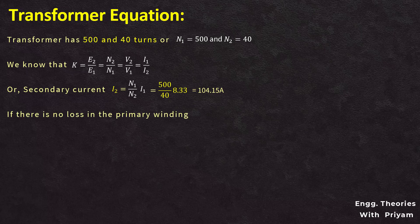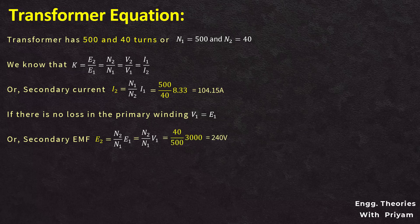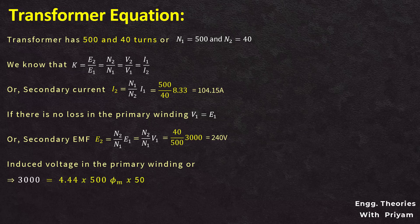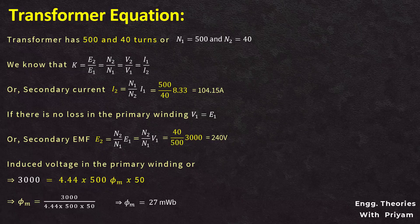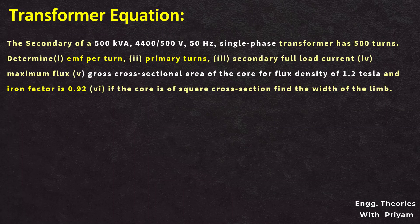For an ideal transformer with no loss in the primary winding, V1 = E1 and V2 = E2. So E2 can be determined from the voltage transformation ratio: E2 equals N2 by N1 into V1, which is 40 by 500 into 3000, giving E2 = 240 volt. The induced EMF in the primary E1 equals 4.44 into N1 into f into φm, from where φm equals E1 divided by 4.44 into N1 into f, resulting in φm = 27 milliWeber.